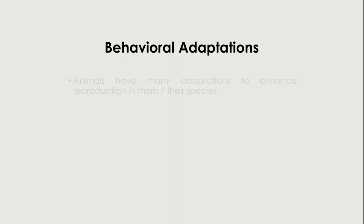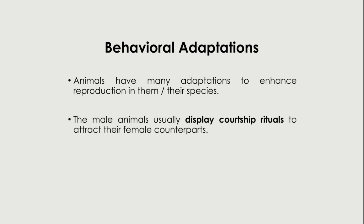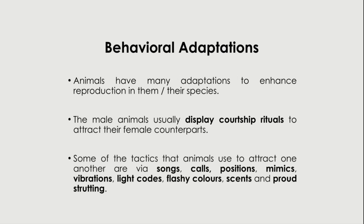Animals have many behavioral adaptations to enhance reproduction in their species. Male animals usually display courtship rituals to attract their female counterparts. Tactics that animals use to attract one another include songs, calls, positions, mimics, vibrations, light codes, flashy colors, scents, and crowd strutting — all to ensure they can reproduce.